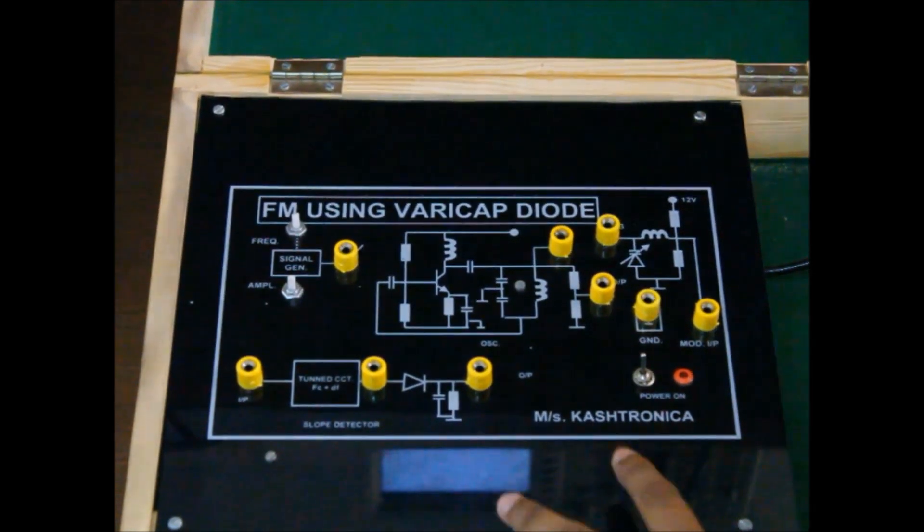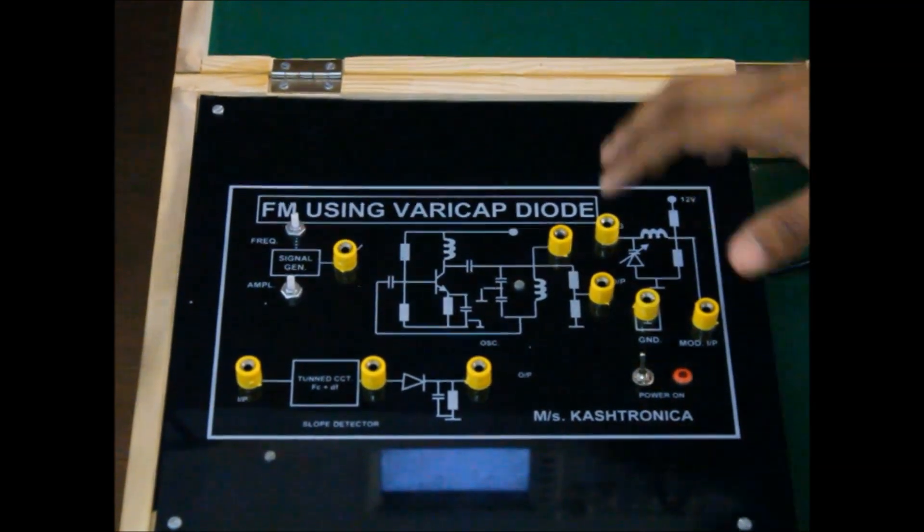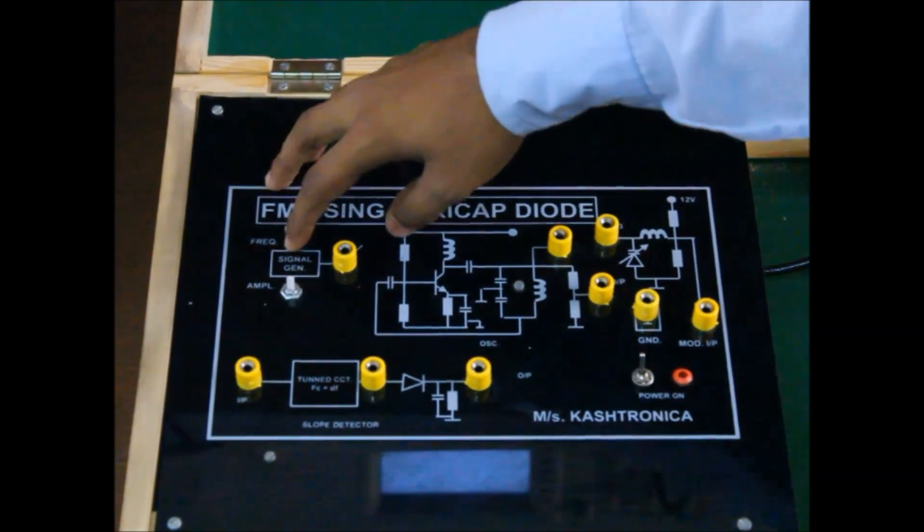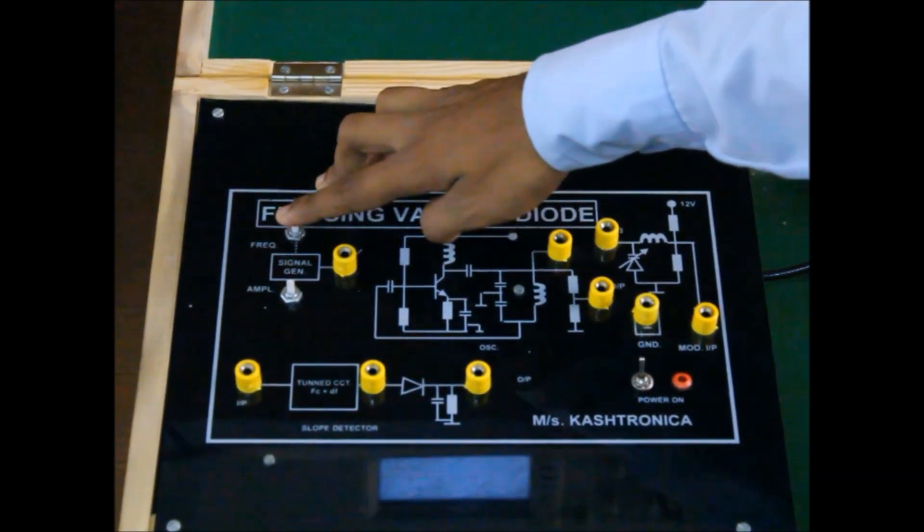Let's move on to the procedure. We are using a Castronica kit for FM using Varicap Diode. This kit has an inbuilt frequency and inbuilt signal generator. You can vary the amplitude and frequency using these two knobs.